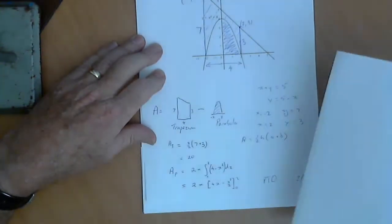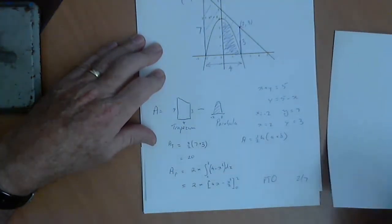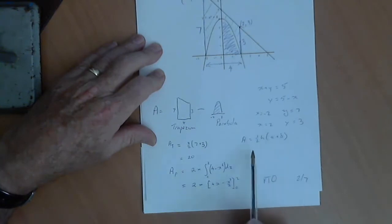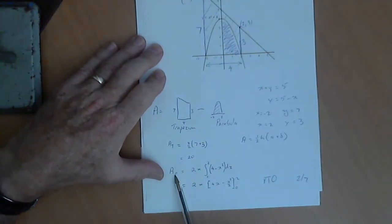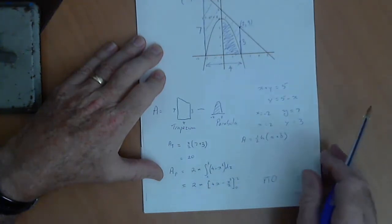The area of our trapezium in a trapezium formula is half the height, a plus b. So, substitute those values in, work out the trapezium area as 20. Then, our parabola, we're going to double the integral from 0 to 2 of 4 minus x squared, find the primitive, evaluate it between 0 and 2.